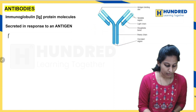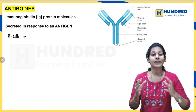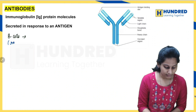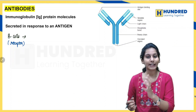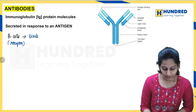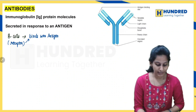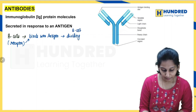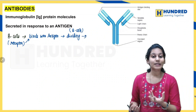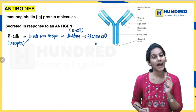When an antigen enters the body, B cells with receptors on their surface will bind to the antigen. Once the B cell binds with the antigen, the B cells start multiplying and dividing. After this division, they produce a cell called a plasma cell, and it is the plasma cells that produce the antibodies.